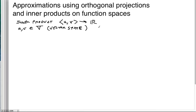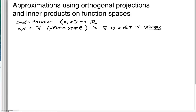V is a set of vectors, and we interpret vectors to be a very general idea. They don't have to be arrows or directed line segments in R^n. It could be something like functions.